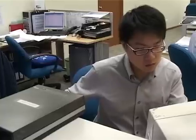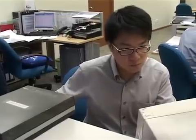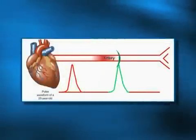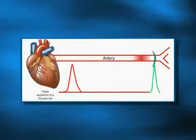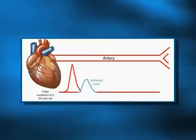The speed at which the reflected wave comes back is very important. If we look at a person who is about 25 years old, when he generates a pulse wave from the heart, the wave will travel down, hit the bifurcation, and come back during the diastolic phase.